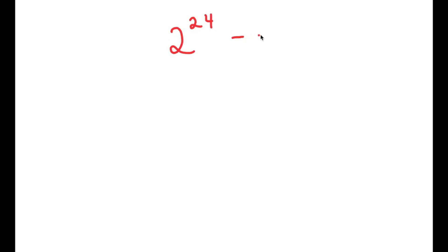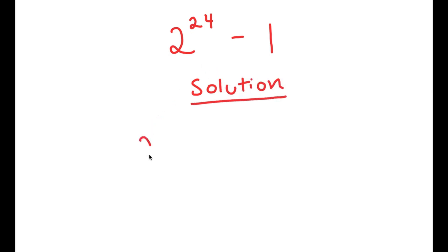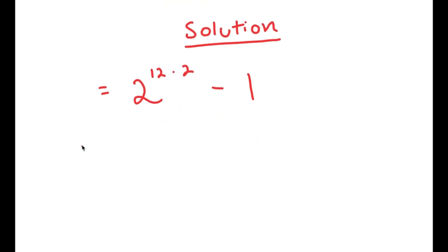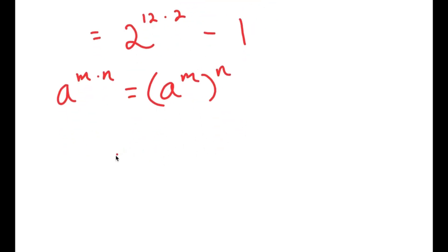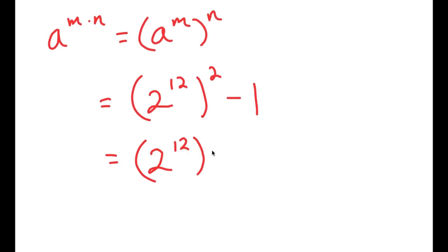In this video, I'm going to be solving 2 to the power of 24 minus 1. First, I'm going to rewrite this as 2 to the power of (12 times 2) minus 1, since 24 equals 12 times 2. Using the property that a to the power of m times n equals a to the power of m, to the power of n, I can rewrite this as (2 to the power of 12) to the power of 2. And I'll rewrite 1 as 1 squared, giving me (2¹²)² minus 1².